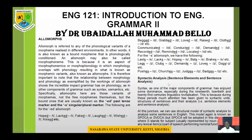The next allomorph is -s. We call it the -s inflectional morpheme item. It is used in the formation of plural forms of words. Just like the -ed allomorph, the -s has three different pronunciations: /s/, /z/, and /ɪz/. For examples of the /s/ sound: 'lasts', 'lacks', 'hopes', 'bats', 'breaks' — all carry the /s/ pronunciation.